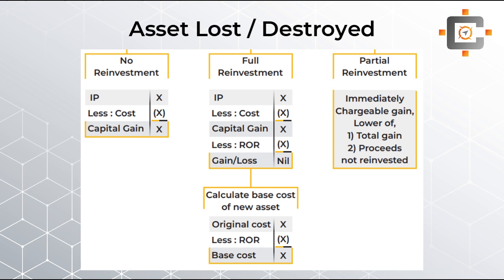The third possibility is partial reinvestment. Here, rollover relief is claimed partially, so a partial chargeable gain arises. The amount of chargeable gain depends on your total gain amount and how much of the proceeds you did not reinvest.